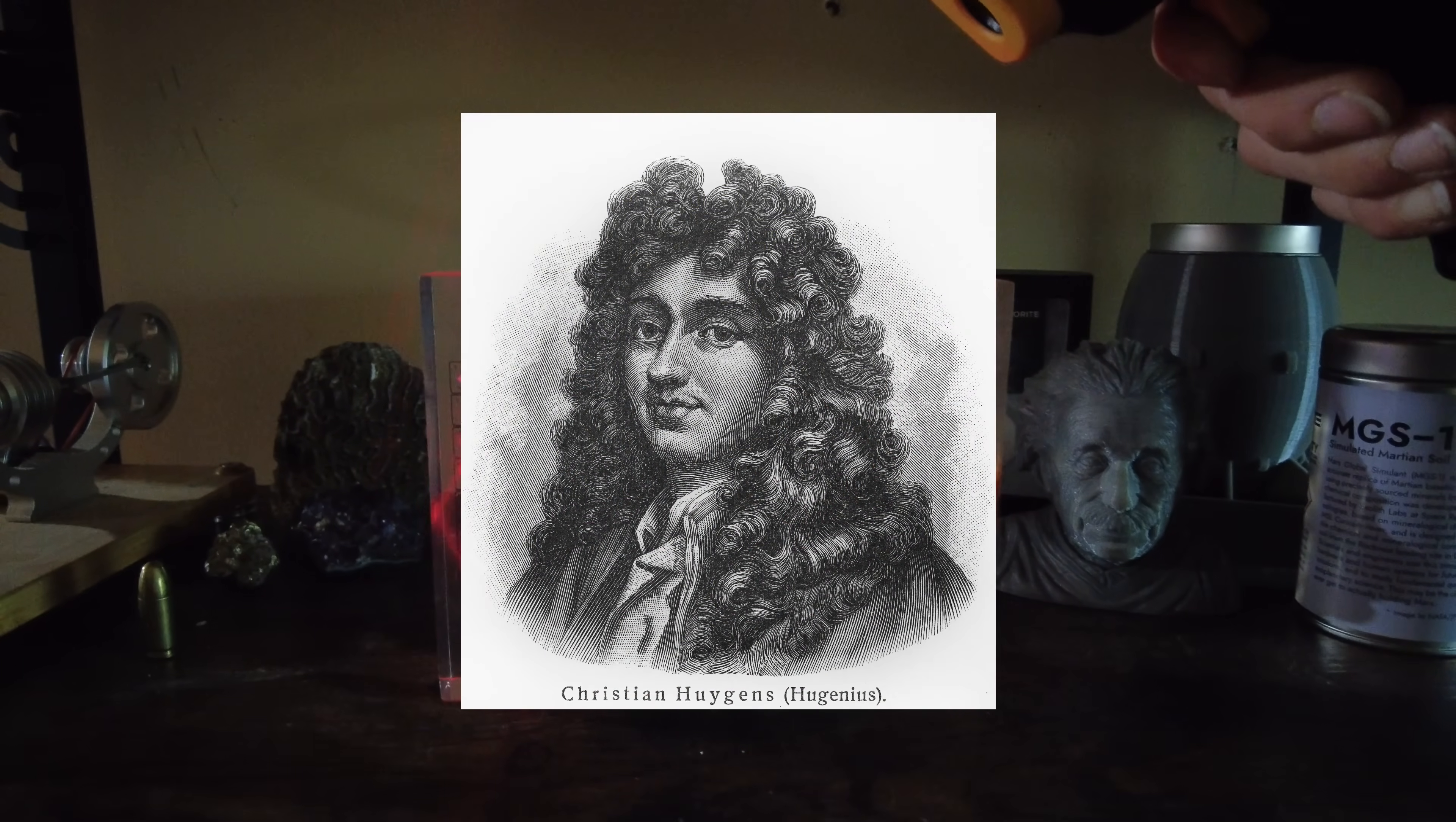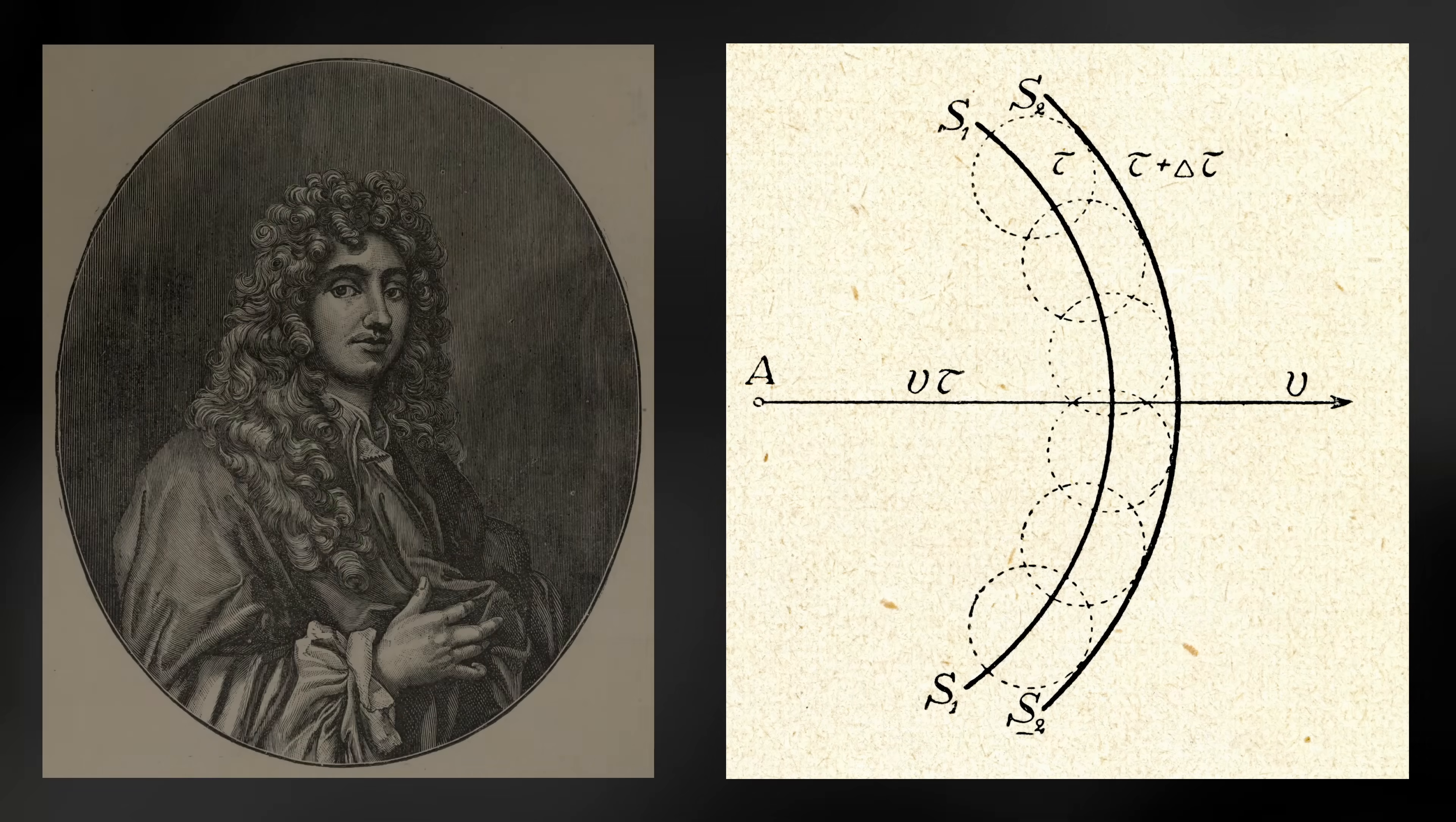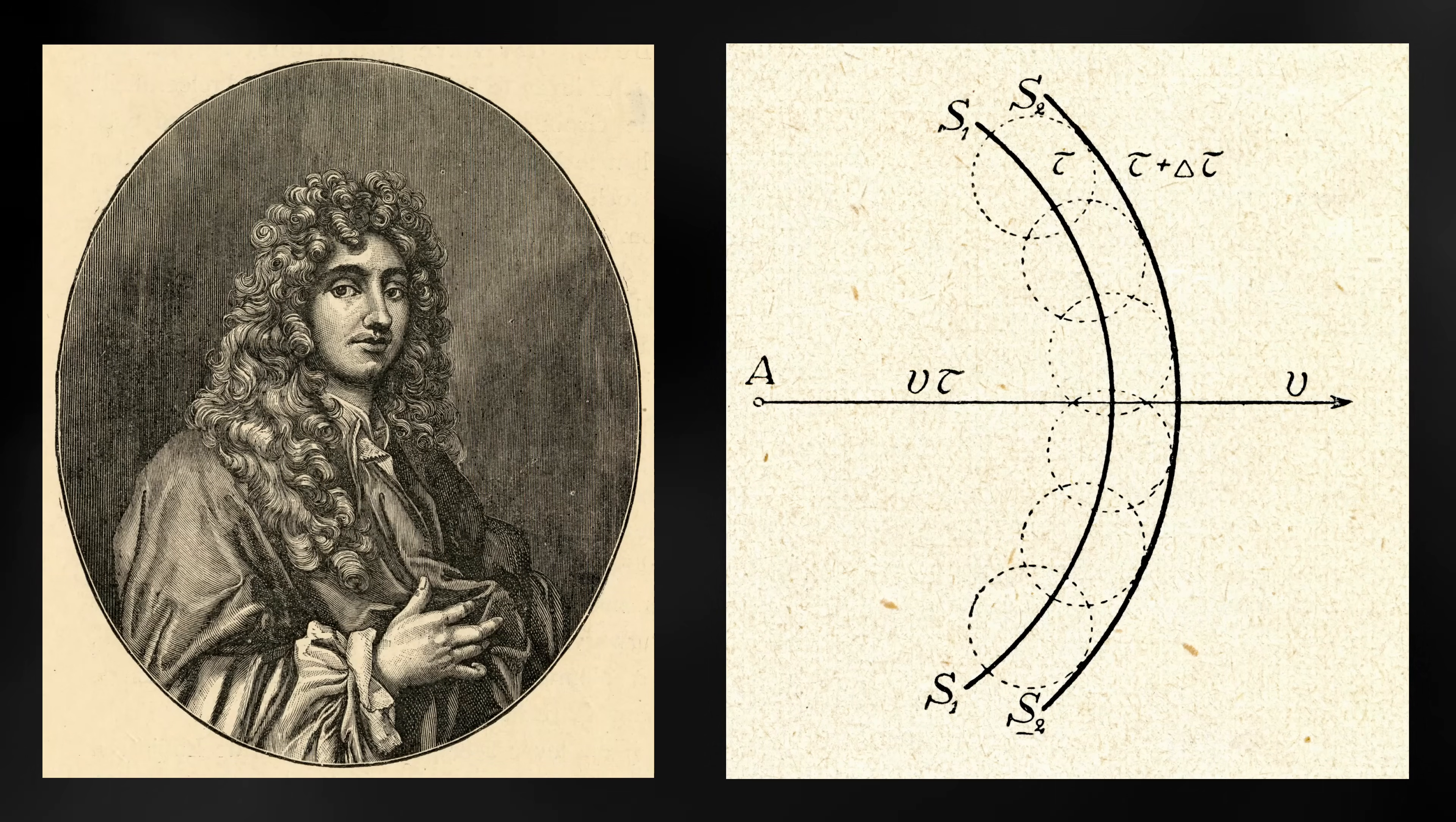For that, you'll need to ask Christian Huygens, another man from history who is also mysteriously not alive today. Call me paranoid, but I think the government is up to something. But this dude was a Dutch physicist who came up with a model that doesn't exactly explain what light is, but it does accurately and beautifully explain how light propagates.